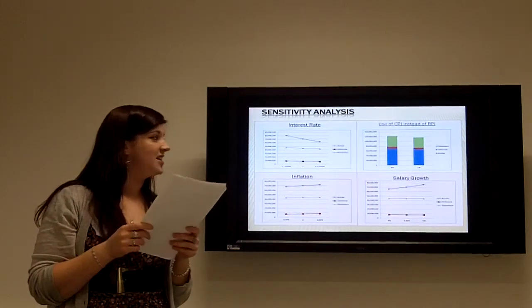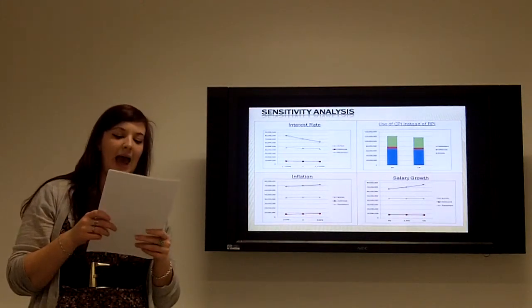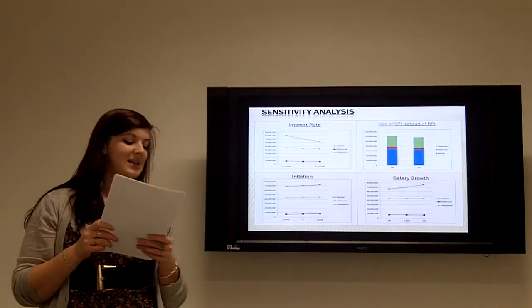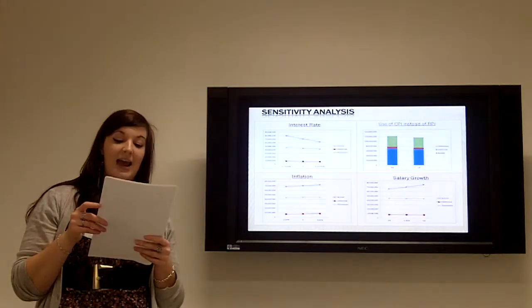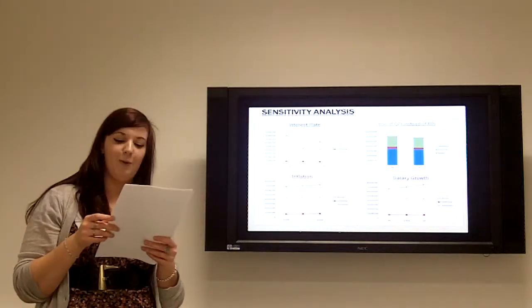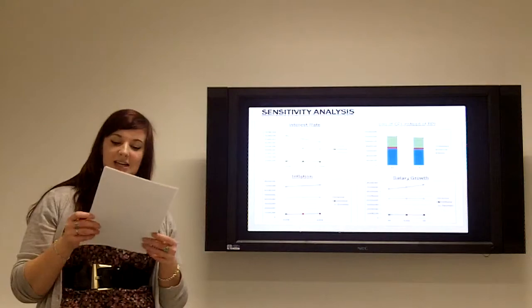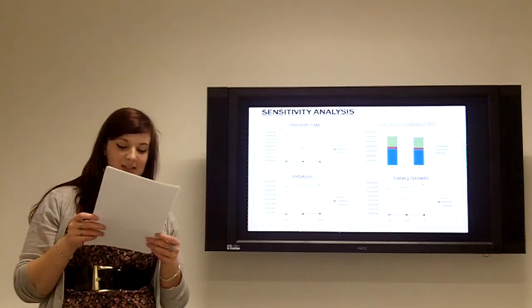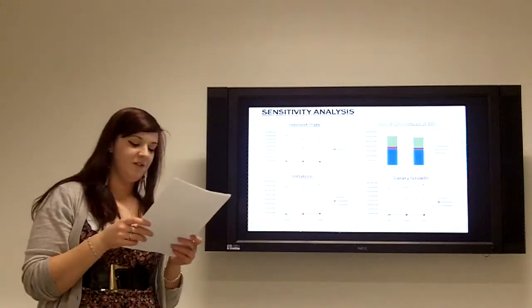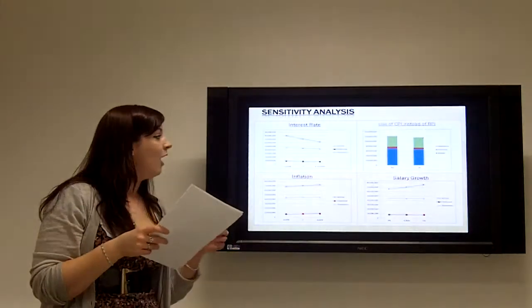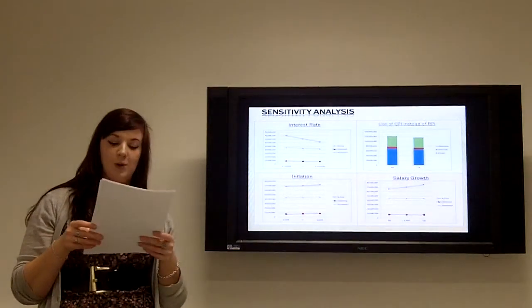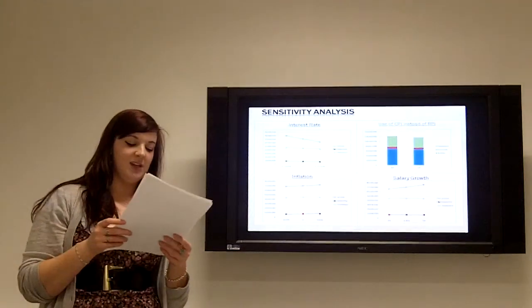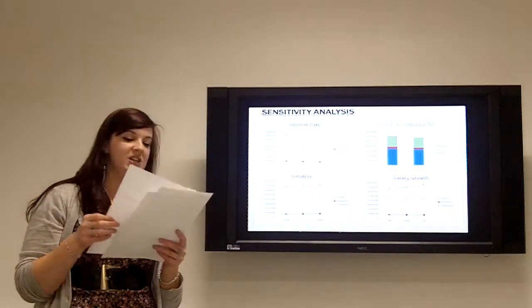The biggest change there is with the actives. By decreasing the interest rate by 0.5% it increases our liability by 15% and if we were to increase the interest rate by 0.5% this would decrease our liability by around 12%. The valuation for the pensioners liability is less sensitive because this value is only affected by the change in post-retirement interest whereas deferreds and actives are affected by both changes.